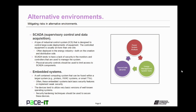The first individual environment we're going to talk about is the SCADA environment, or Supervisory Control and Data Acquisition Systems. They are a type of industrial control system designed to control large-scale deployments of equipment. The controlled equipment is usually at more than one site. SCADA is often deployed in the energy industry, both on the creation side and the distribution side, such as at your local utility. SCADA tends to have a lack of security on the monitors and controllers used to manage the system. Physical security controls should be used to limit access to SCADA components — that is about the best defense for SCADA.